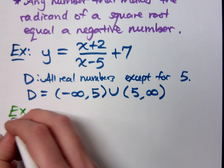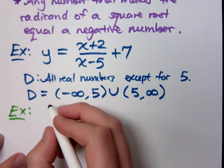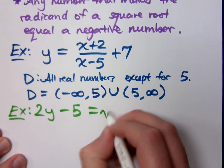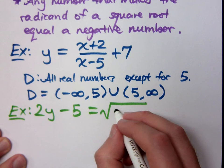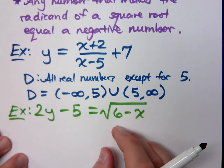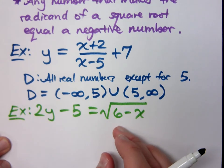What if I were to give this example? 2y - 5 equals the square root of 6 - x. I can almost plug in anything that I want to for x, except I've got a square root. What did I say about the limitations for the square root? It can't be negative. The radicand can't be negative, so the radicand must be positive or zero, right?